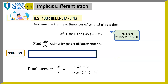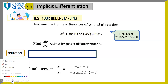Now it's time to test your understanding. I have included a past-year final exam question here from 2018-2019 Semester 2. Please try in 2 minutes. Assume that y is a function of x, and given that x squared plus xy plus cos 2y equals 8y. Please try to find dy/dx using implicit differentiation.